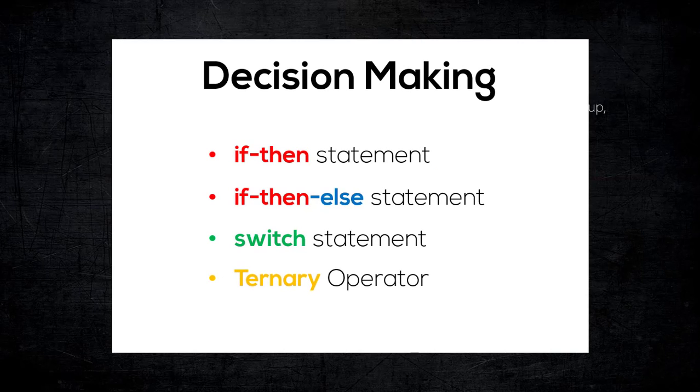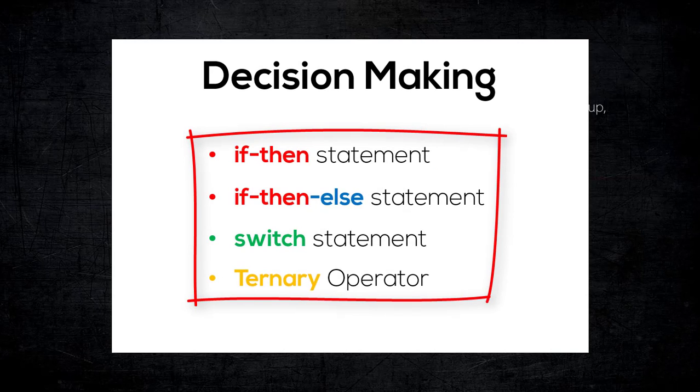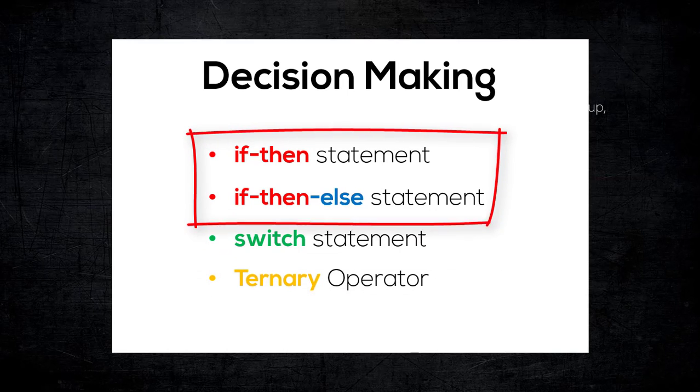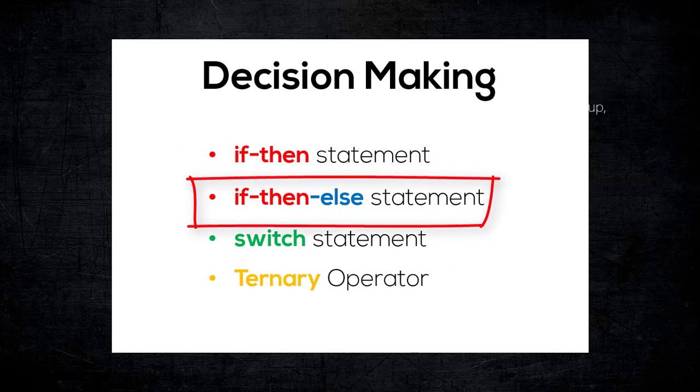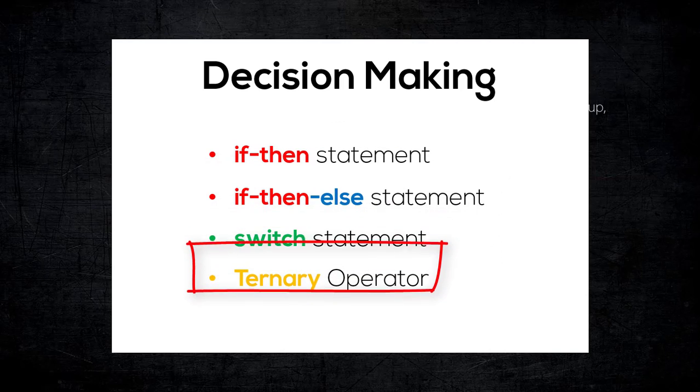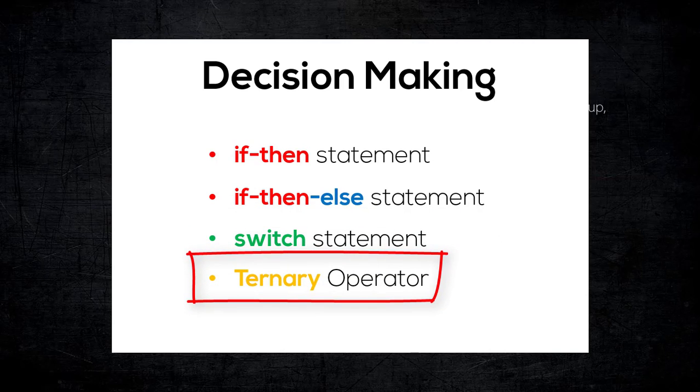Alright, that's it guys. We have learned about the four different decision-making statements offered by Java, which include the if-then statement, the if-then-else statement, the switch statement, as well as the ternary operator. So if you have any questions, please feel free to leave a comment below. If you like the video, be sure to hit the like button, share it with your friends, and of course don't forget to subscribe to my channel for more videos like this. I'll see you guys in the next video. Peace.